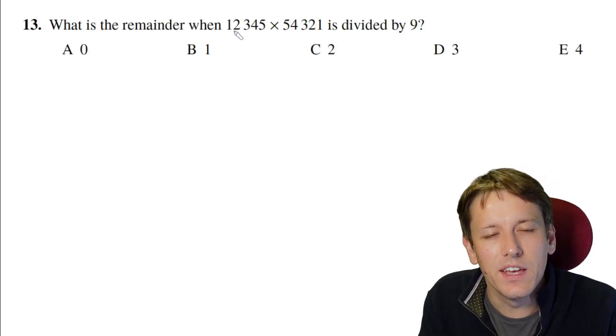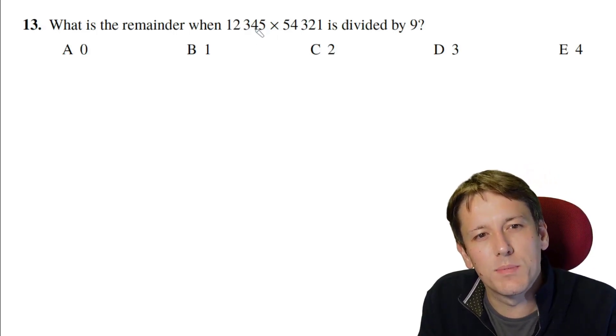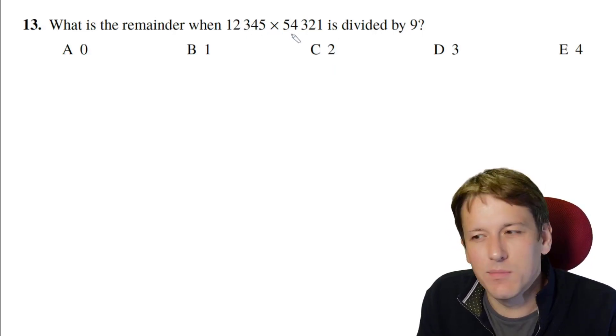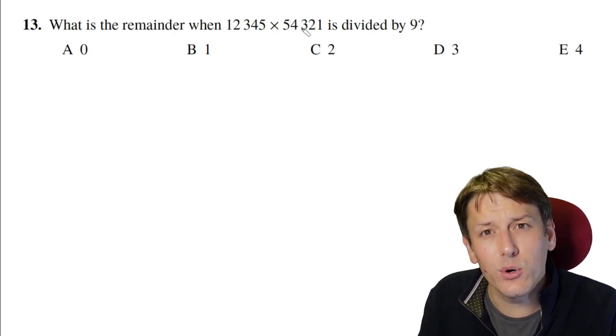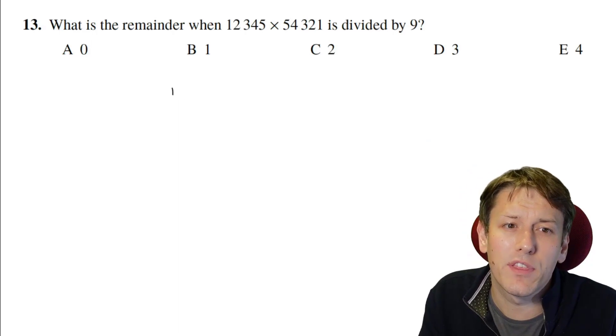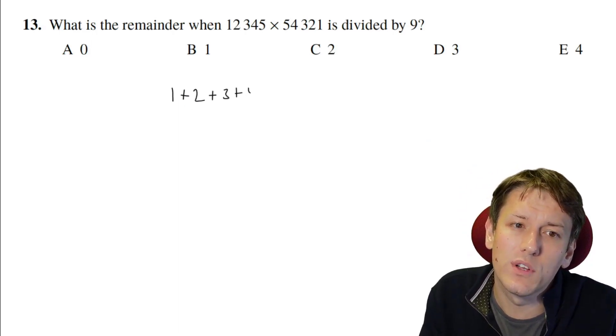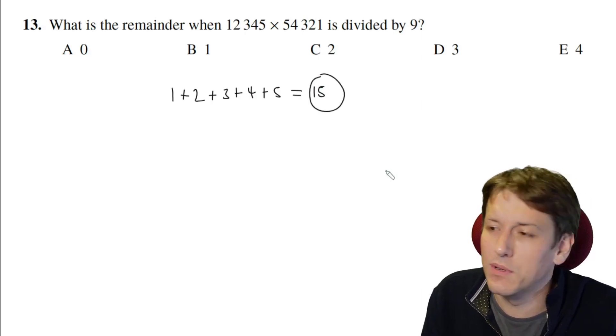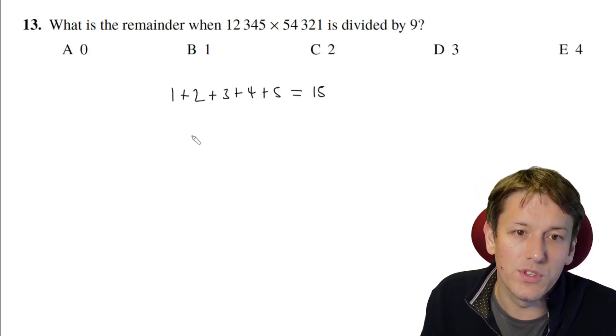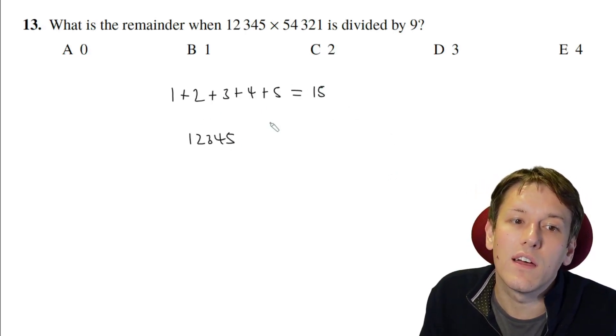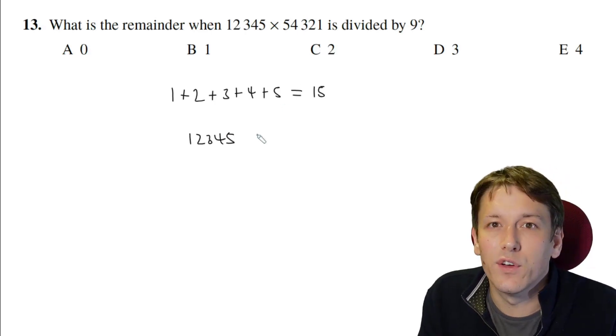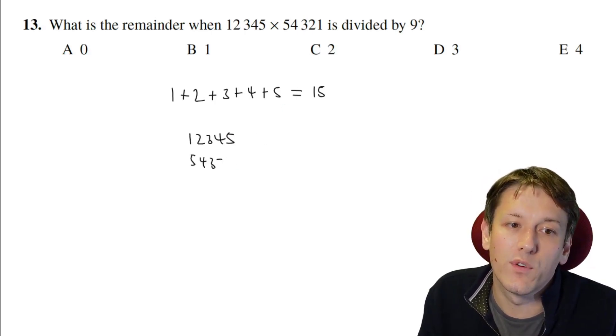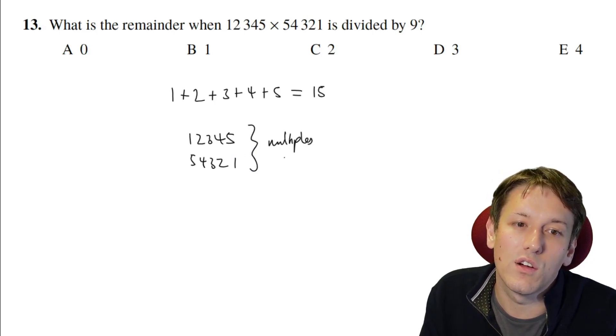And that says that if you sum the digits and you get a multiple of 9, then the number is a multiple of 9. But 1 plus 2 plus 3 plus 4 plus 5 is 15, it's not a multiple of 9. So neither of these are multiples of 9. But there's also the divisibility test for divisibility by 3. So the fact that when I do 1 plus 2 plus 3 plus 4 plus 5 and I get 15, the fact that this is a multiple of 3 means that this number 12345 is a multiple of 3. 54321 has the same digits, so 54321. These are both multiples of 3.